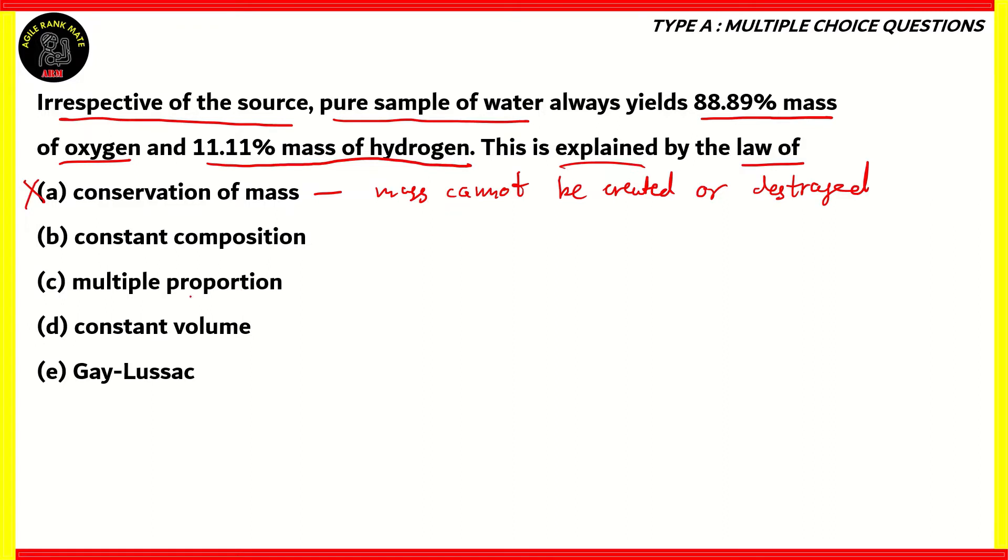What about option E, Gay-Lussac's law? Well, technically, Gay-Lussac's law and the law of constant volume states that volume is proportional to temperature when pressure is constant. So again, this doesn't help in explaining the statement here. So options D and E are incorrect.